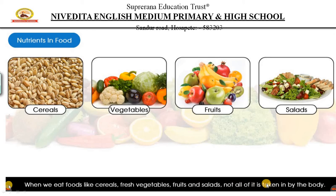Hello children, welcome back to the third part of the chapter food and digestion. In the previous video we learnt about the different nutrients that we get in food — carbohydrates, fats, proteins, vitamins and minerals. Apart from that, we also have something called roughage and water in food, and we will discuss about that in this video.